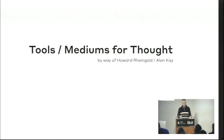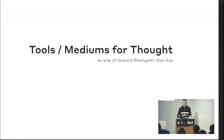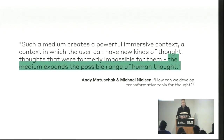I'm going to take you through a collection of ideas that provide a potential framework for a way forward. In the early days of computing, it was expected that a computer user was also a computer programmer — this is how you got the computer to do what you wanted. Computers were there to aid creation, to help you author new ideas. The argument was made that instead of tools for thought, as Howard Rheingold would have put it, a medium for thought is a more powerful goal for computing — saying such a medium creates a powerful and immersive context in which the user can have new kinds of thoughts, formerly impossible to them. The medium expands the range of human thought.